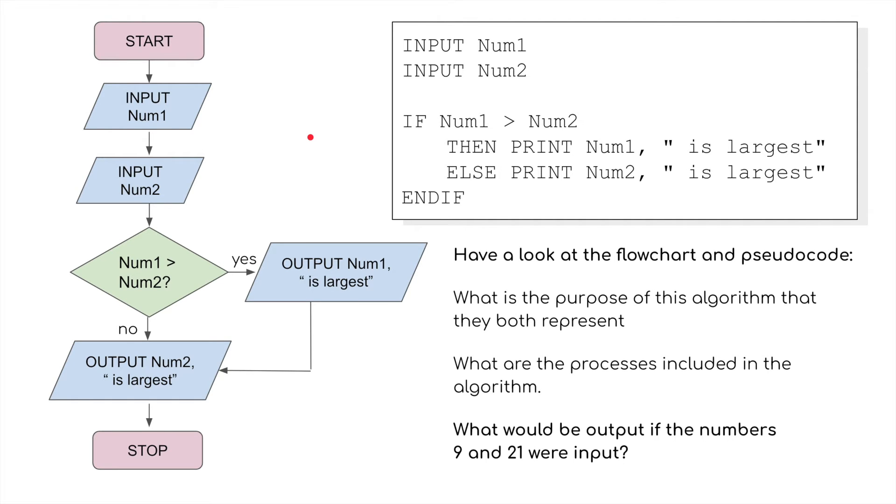Here we have something a little bit more complicated. Basically we've got a pseudocode and a flowchart explaining the same thing. Have a look at this. What is the purpose of the algorithm that they both represent? What are the processes included in the algorithm? And what would be the output if the numbers 9 and 21 were inputted?